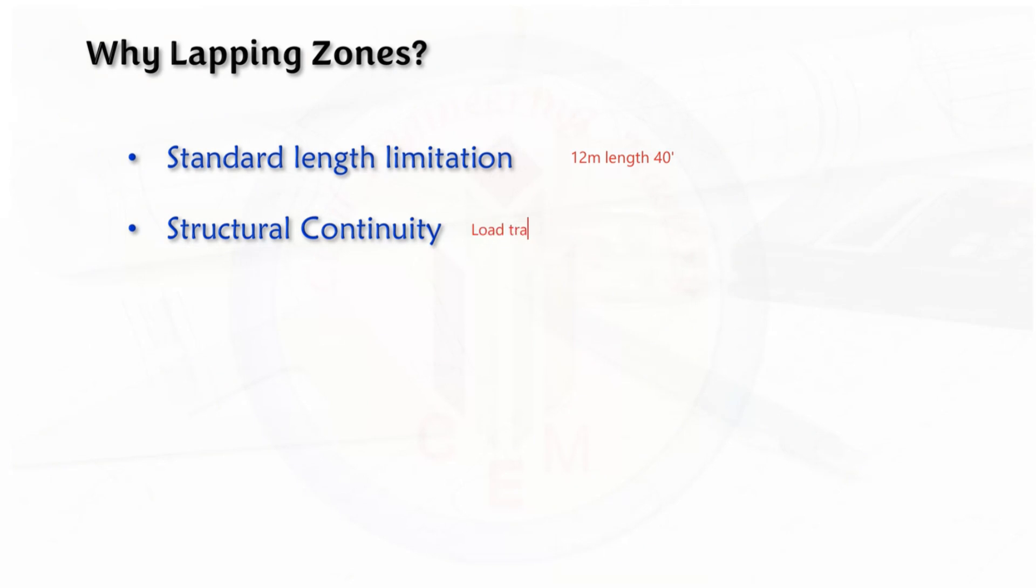This lapping of bars ensures the load transfer effectively between two bars. This lapping maintains the tensile strength and structural integrity of the beam. So if we use a single bar, how we get the structural integrity and tensile strength? In a similar manner, if we do the lapping, the lapping maintains that strength, tensile strength, and the structural integrity of the beam.